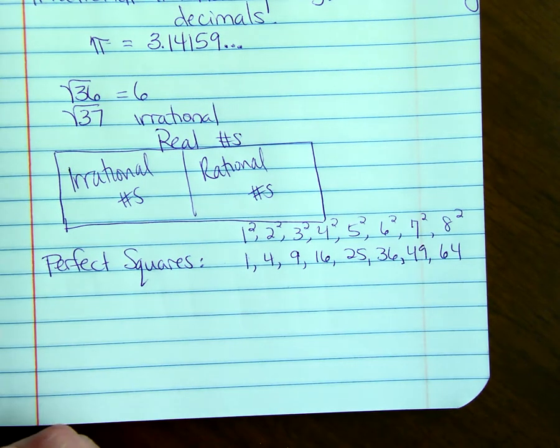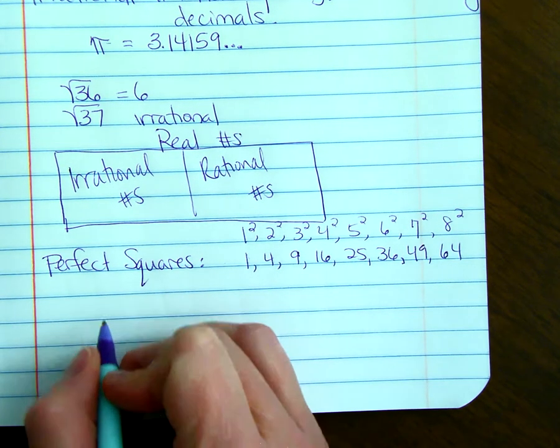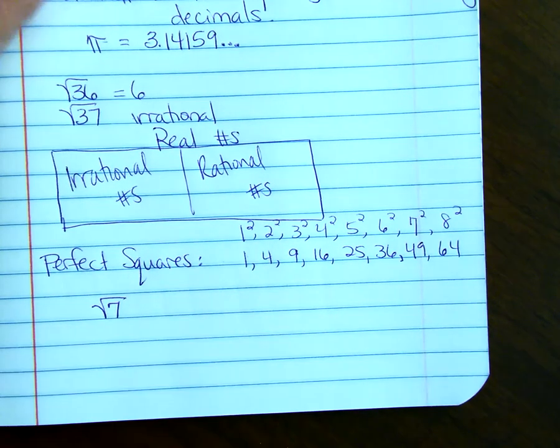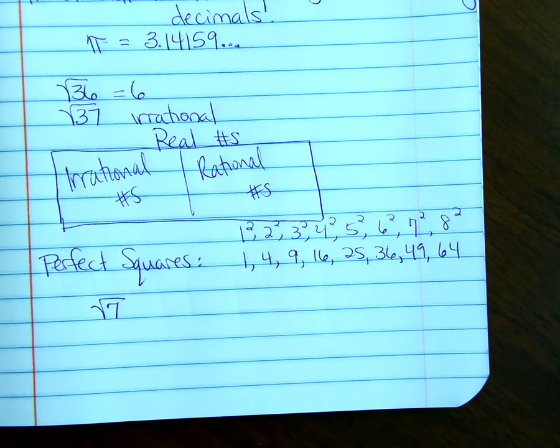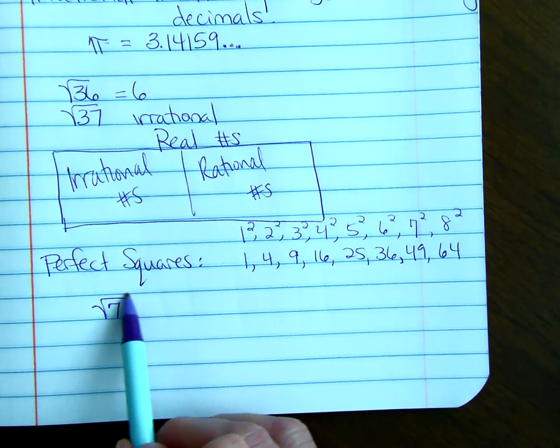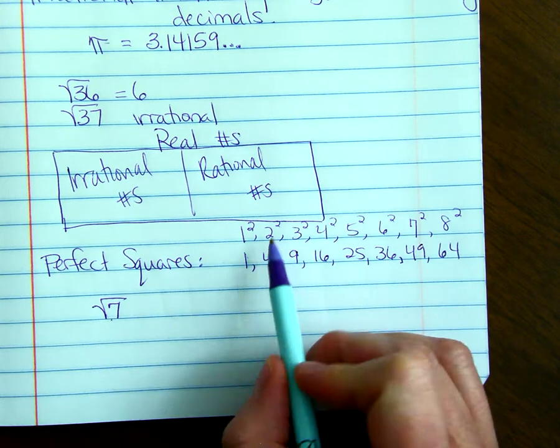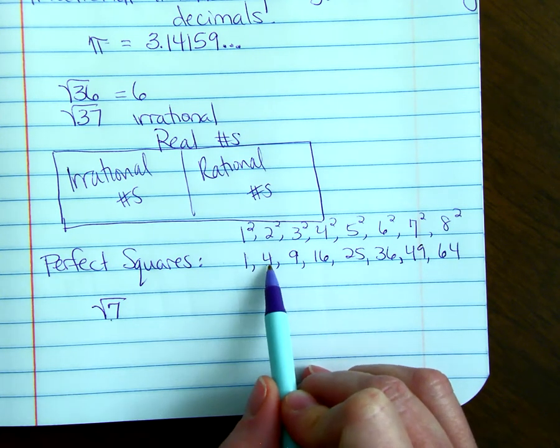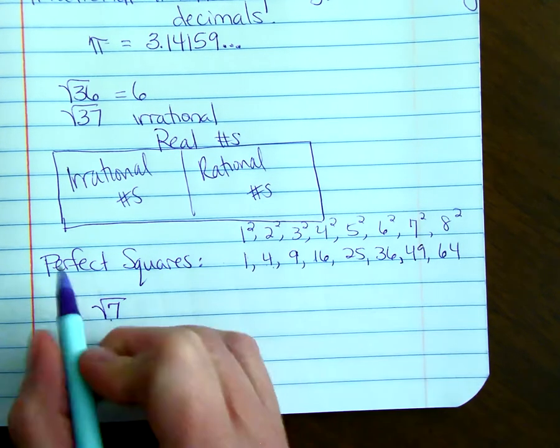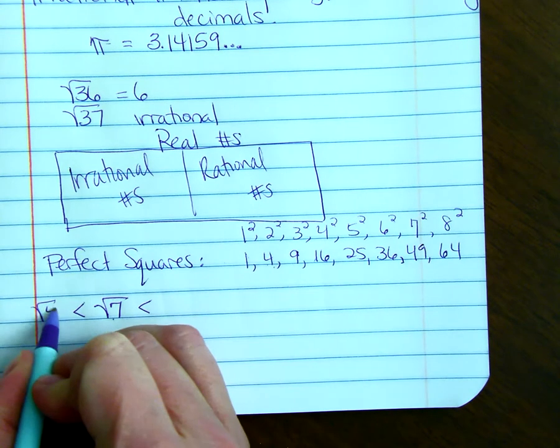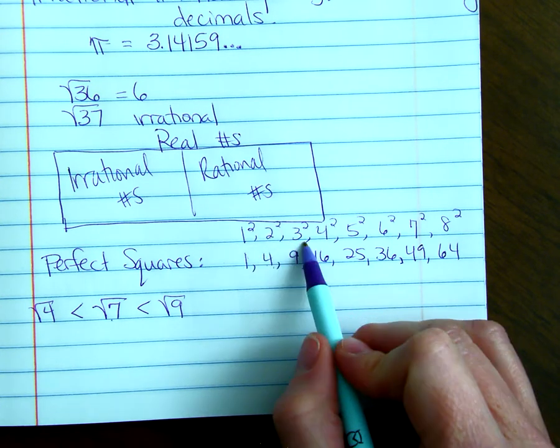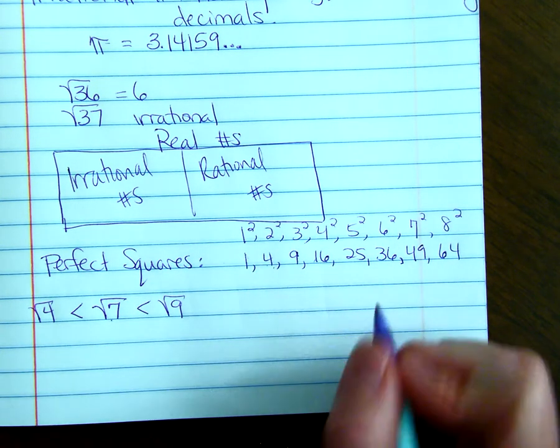Now, sometimes we're asked what two consecutive numbers does the square root of 7 come between? So, the square root of 7, if we look at the radicand, we look at where 7 would fall between this list of numbers here. 7 would be between 4 and 9. So, the square root of 7 is between the square root of 4 and the square root of 9, but those are just 2 and 3. So, the square root of 7 is between 2 and 3.